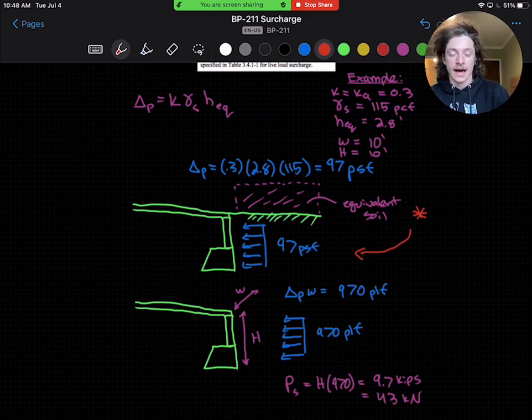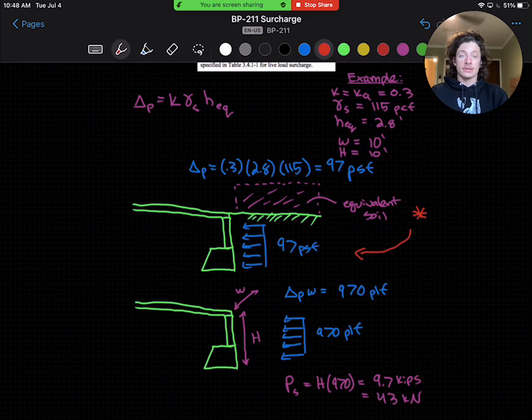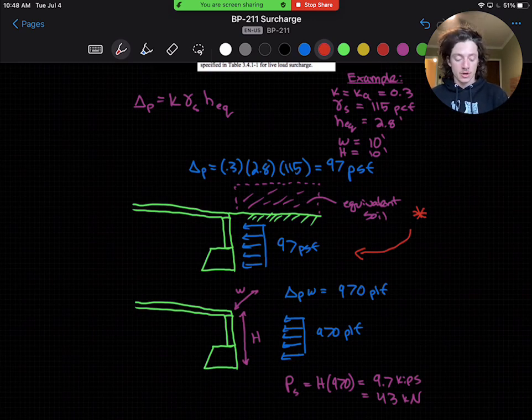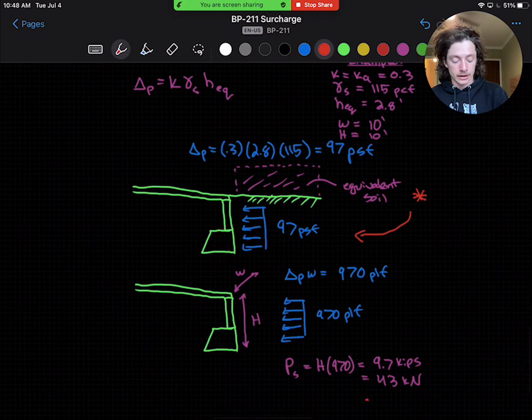We're taking that area load, like we discussed in previous lectures—that was a triangular distribution for soil backfill, active earth pressure. We can convert that to a line load and then a resultant that we get here of 9.7 kips or approximately 43 kilonewtons.